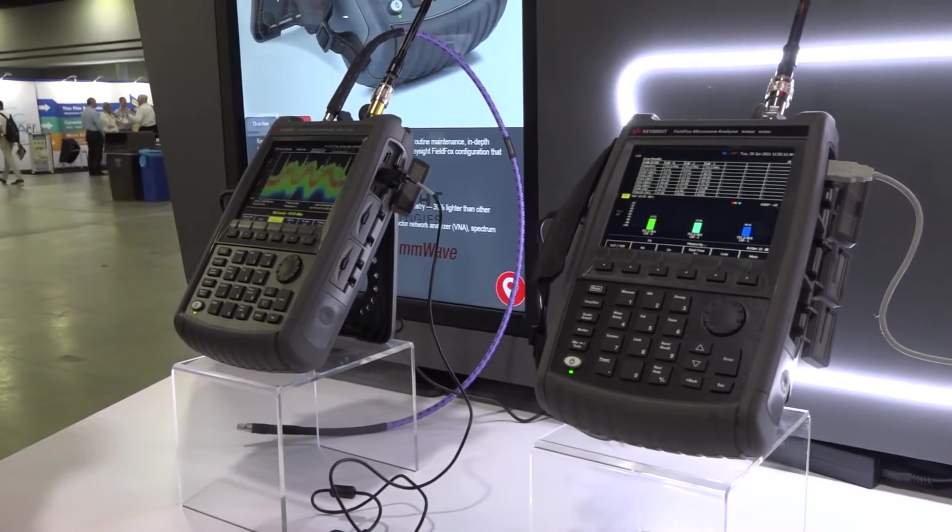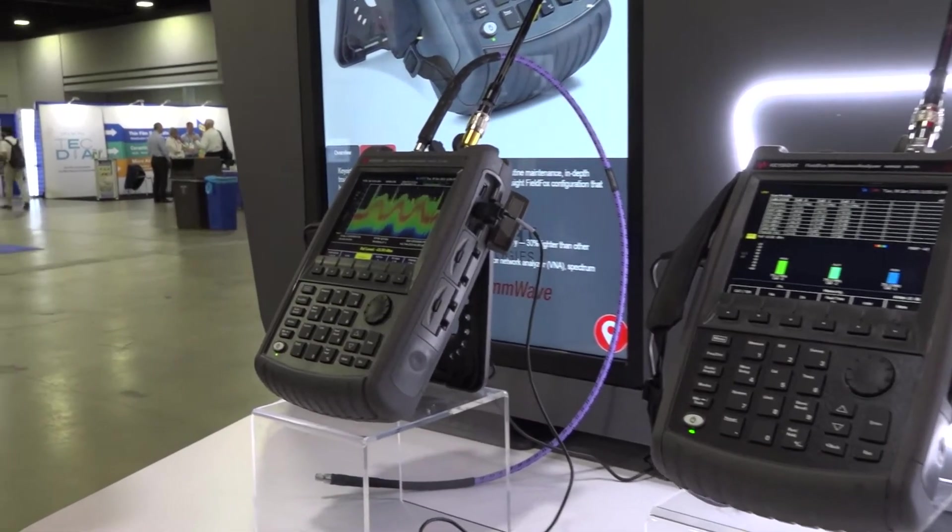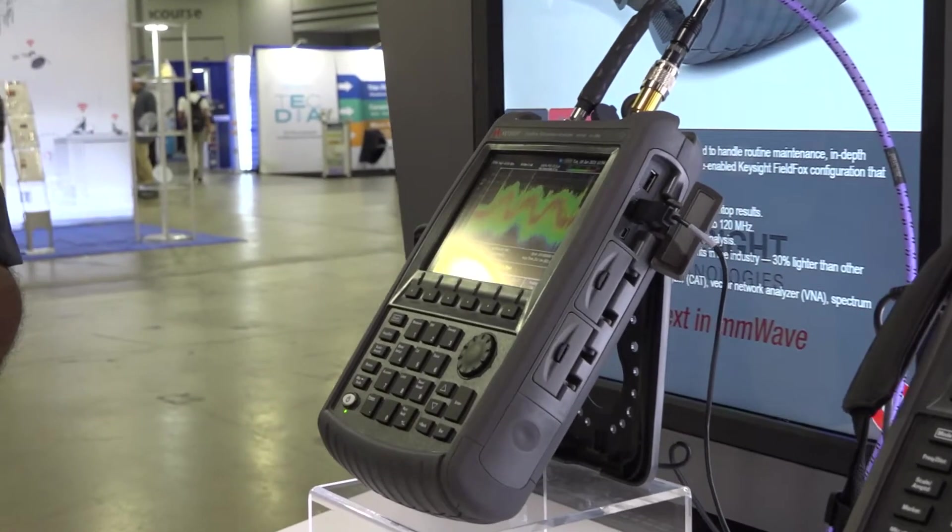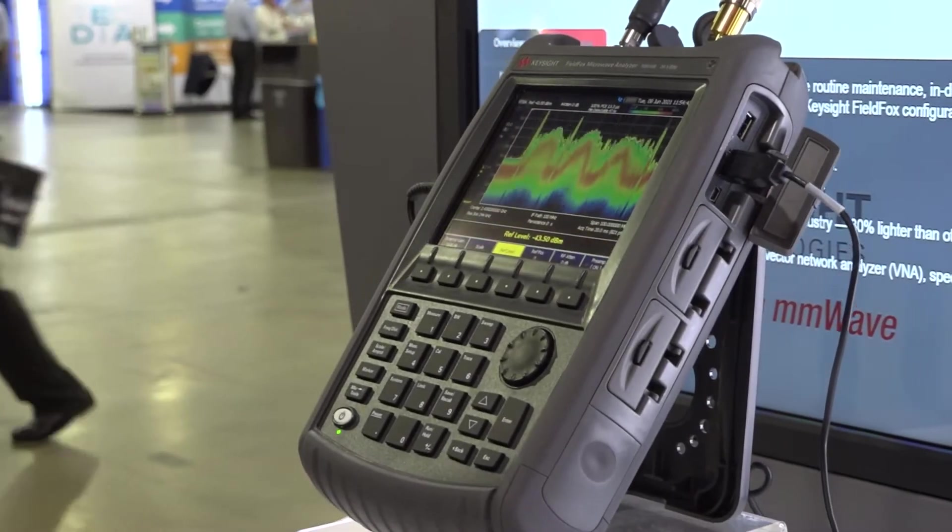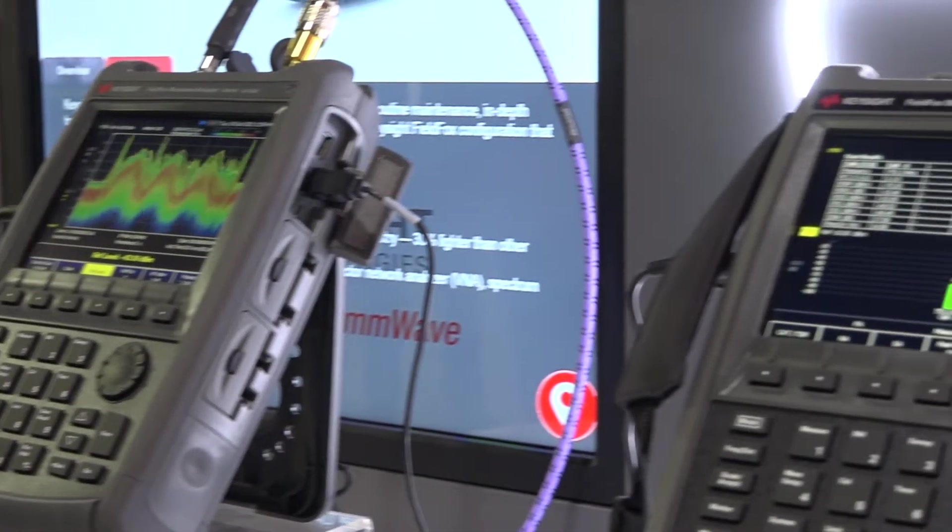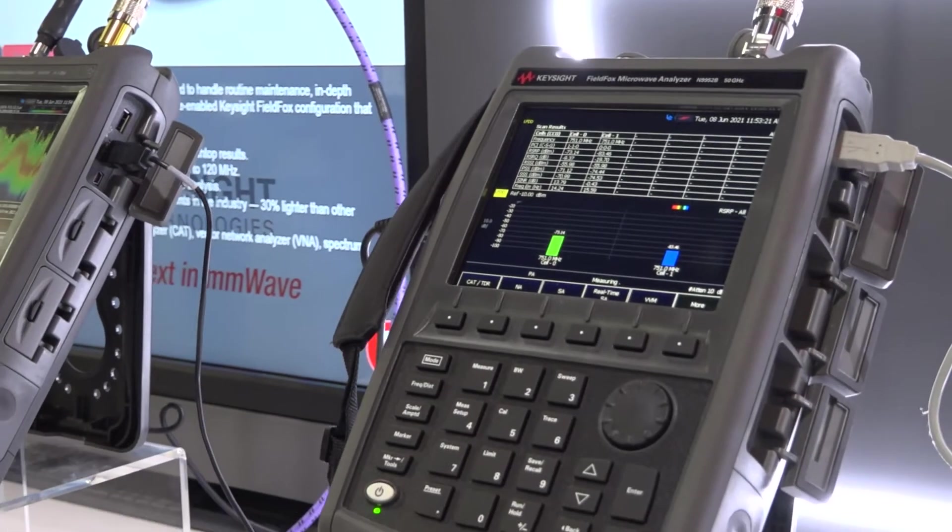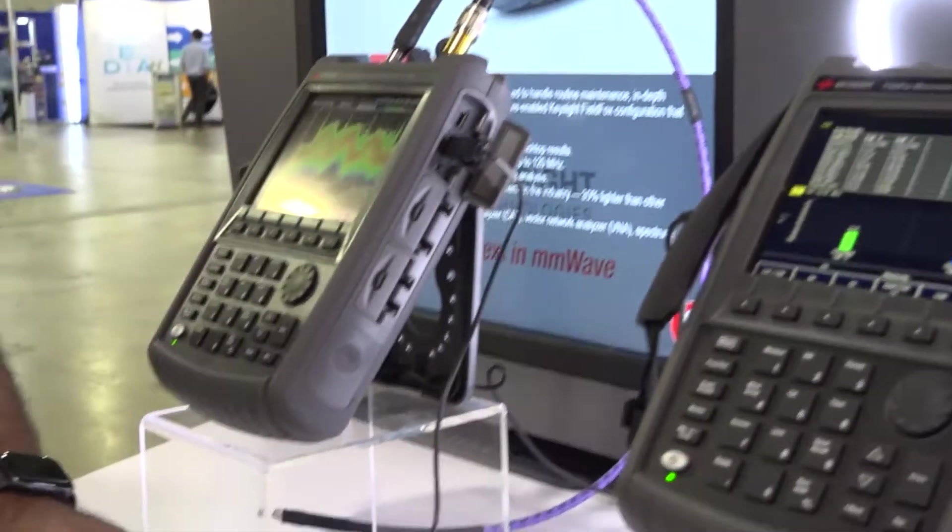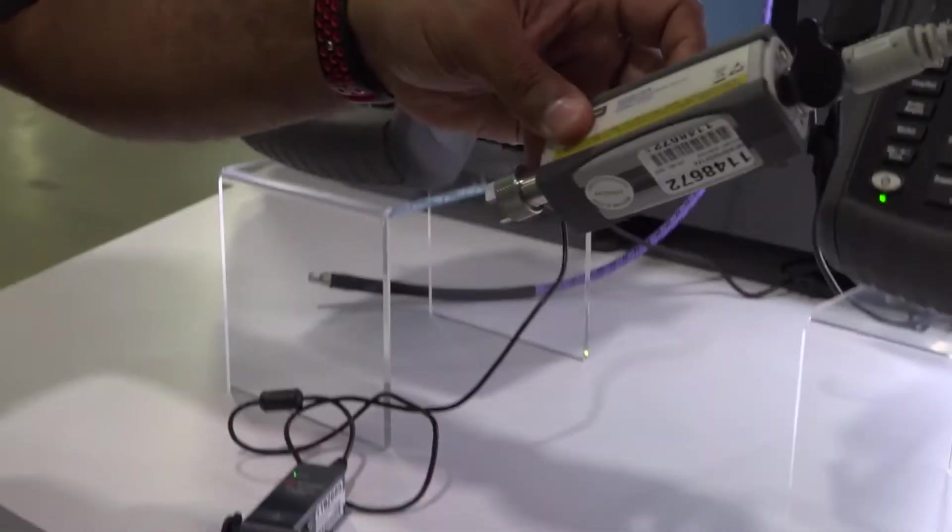These are what we call the Swiss Army knife of test and measurement equipment. They can be network analyzers, spectrum analyzers, vector voltmeters, power meters, over-the-air testers. They include accessories like electronic calibration modules and also our USB power sensor lines.